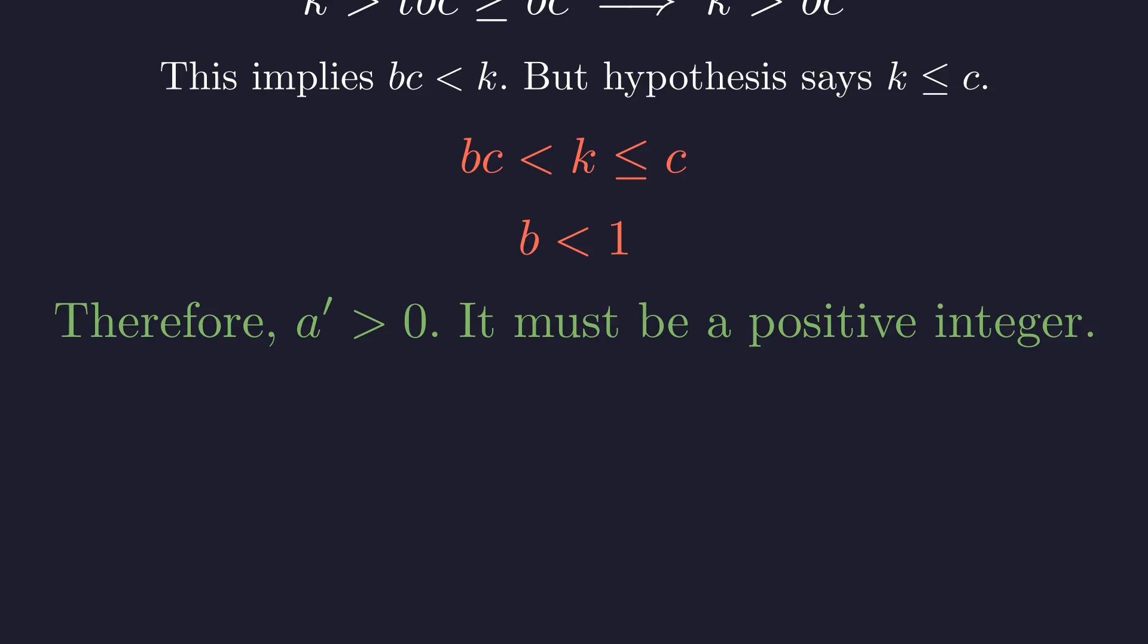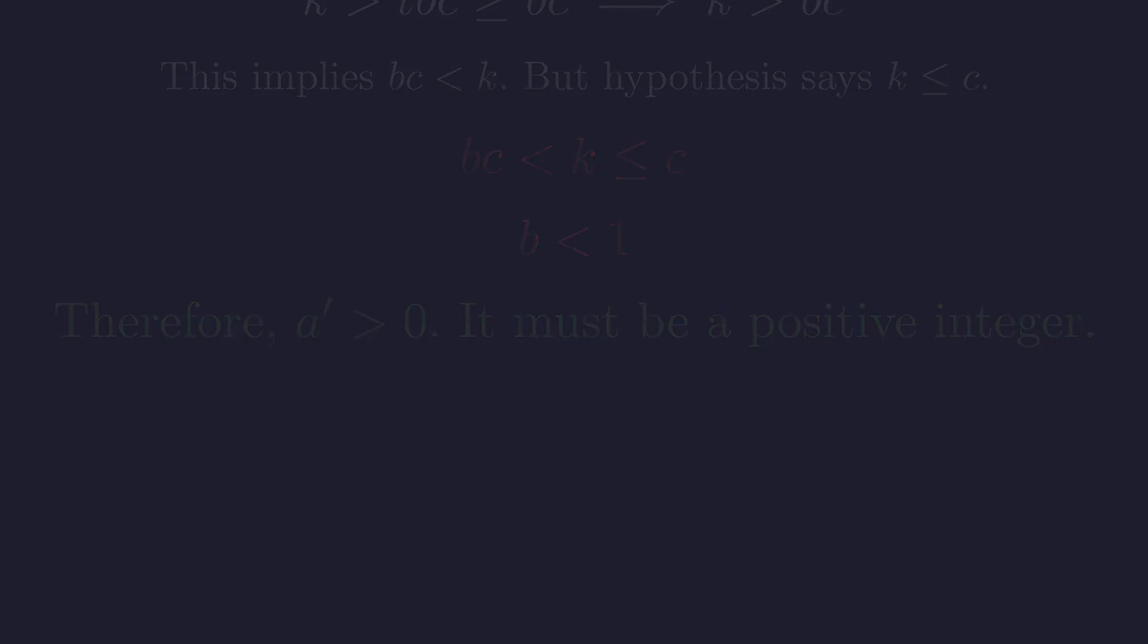Having ruled out zero and negative values, we've proven something crucial. For any positive integer solution, Vieta's formulas always generate another positive integer solution. This solution-generating mechanism is the key to our final argument.